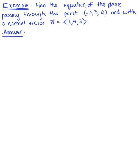Find the equation of the plane passing through the point (-3, 3, 2) and with a normal vector n defined by the components ⟨1, 4, 2⟩.